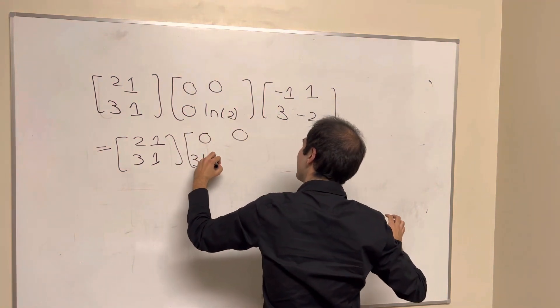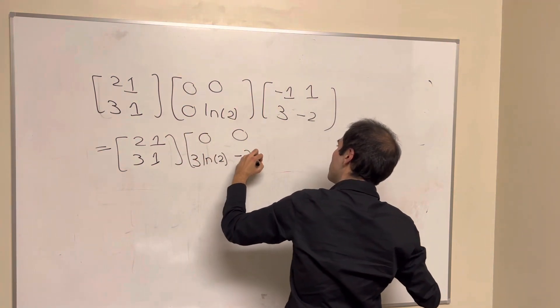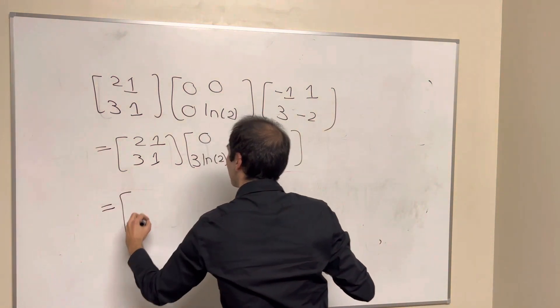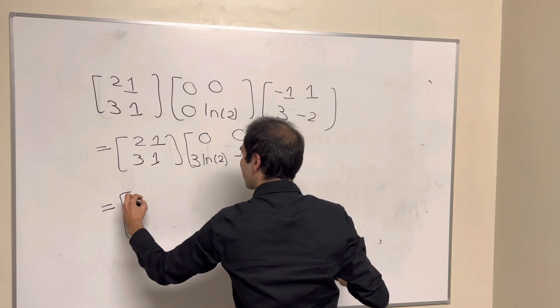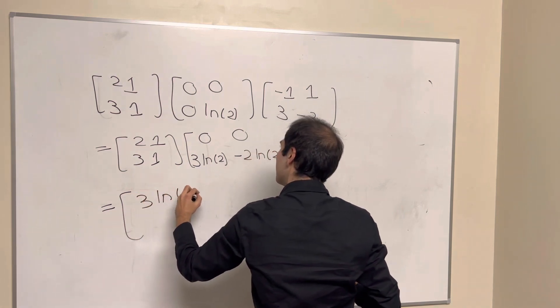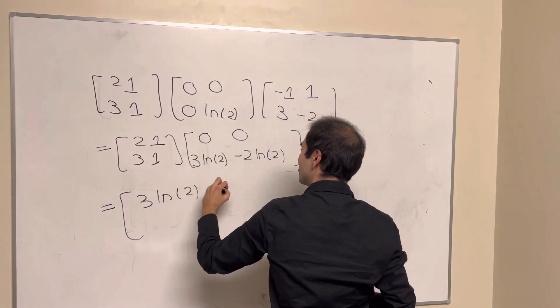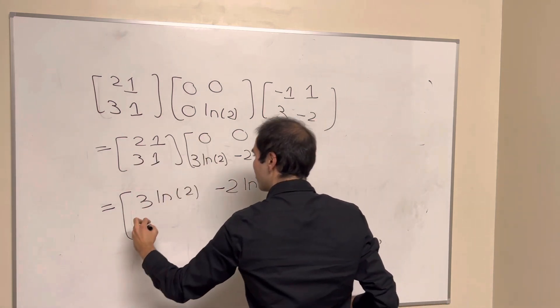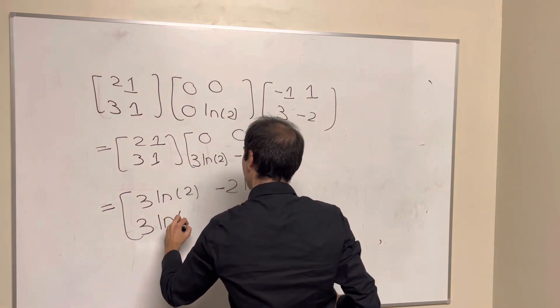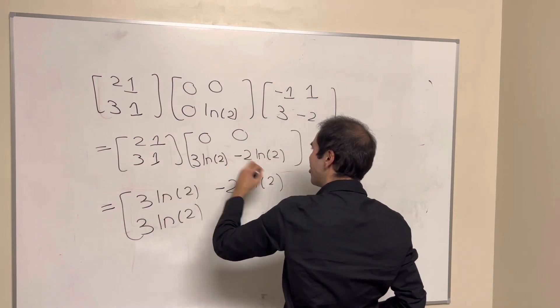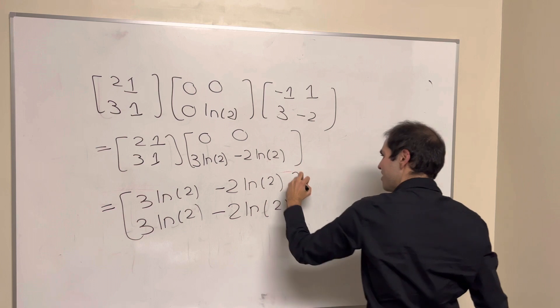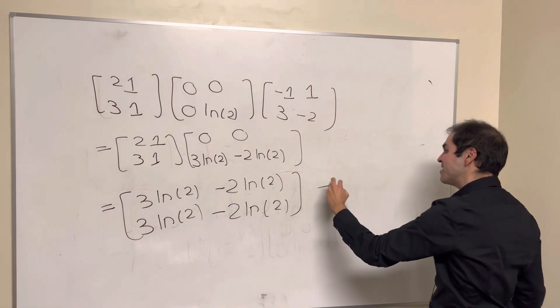And then, we get 3 ln of 2, and then minus 2 ln of 2, and then we get 0, and then 3 ln of 2, 0, minus 2 ln of 2, 0, 3 ln of 2, how nice. And then, 0, 0, minus 2 ln of 2, and there you go, this is ln of A.